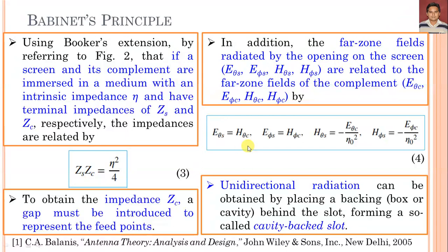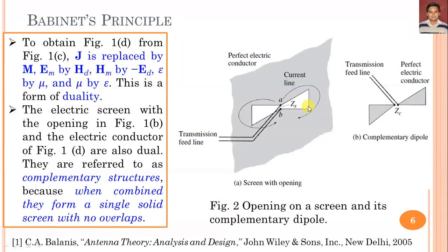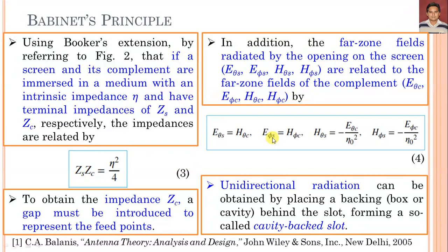From the complementary dipole, the radiation pattern is bidirectional. If we want to obtain a unidirectional radiation pattern, we can place a backing box or cavity behind the slot, forming a so-called cavity-backed slot antenna. The cavity depth should equal B = odd multiples of λ_g / 4, where λ_g is the guided wavelength. In that case, we can achieve high gain as well as unidirectional properties of the complementary structure or aperture antennas. In this lecture, we have understood the basic Babinet principle, and obtained two important formulations: Z_S · Z_C = η² / 4 relating the slot to the complementary structure.